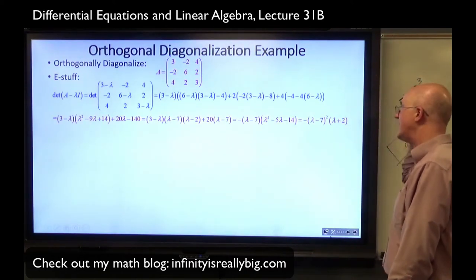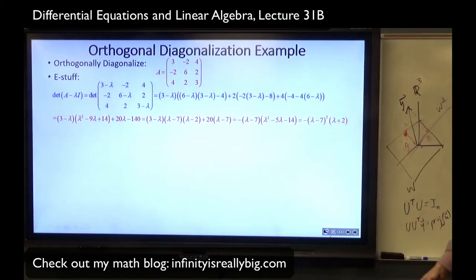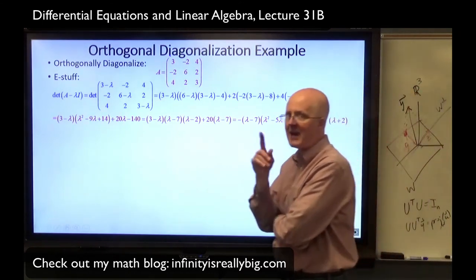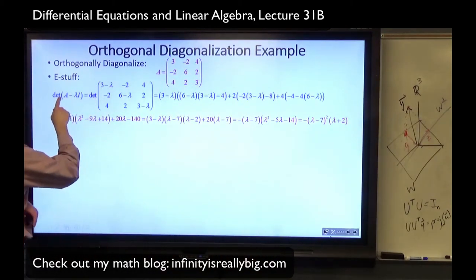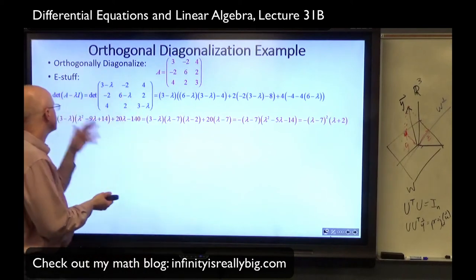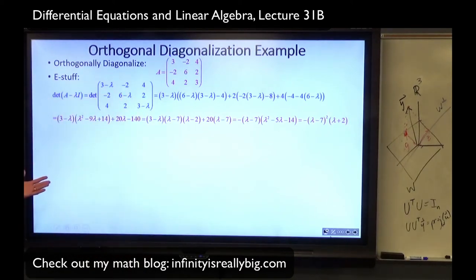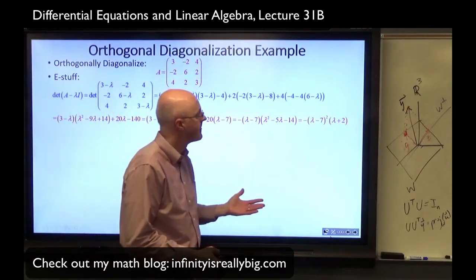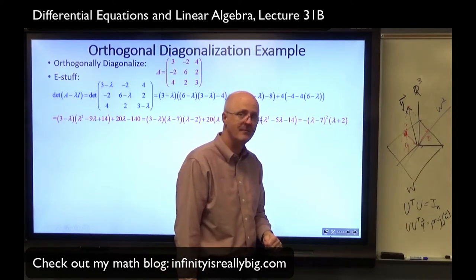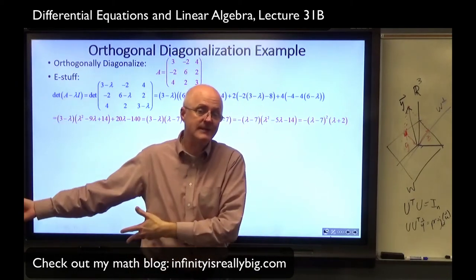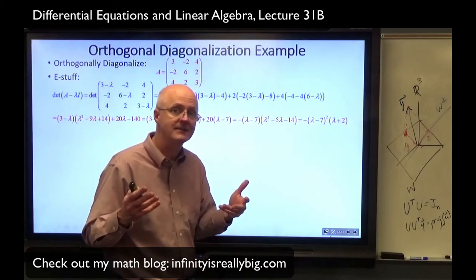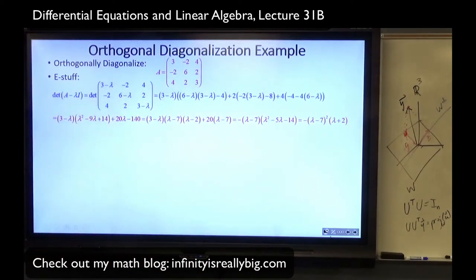The characteristic polynomial factors as −(λ − 7)²(λ + 2). The roots — the eigenvalues — are 7 (multiplicity 2) and −2 (multiplicity 1), regardless of sign convention. The eigenvalue −2 has multiplicity 1; eigenvalue 7 has multiplicity 2. By the spectral theorem, the eigenspace for eigenvalue 7 must be two-dimensional — its geometric multiplicity equals its algebraic multiplicity, which is not guaranteed for general matrices but is guaranteed for symmetric ones.